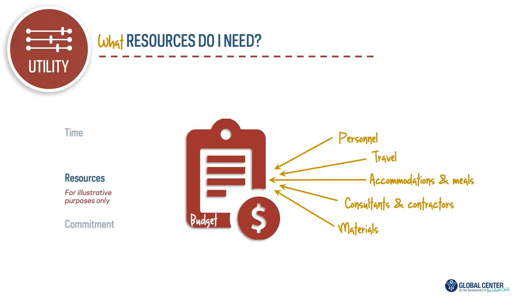In terms of resources, the main thing is what's in your budget. There are five main things to consider: who are the personnel that need to be involved; what is the travel involved — international or domestic — including accommodations and meals; consultants and contractors, such as professional translators if needed; and materials, such as buying tablets or photocopying assessments. There are budget templates included in the resources, and several available online — use those to think through all the different factors.